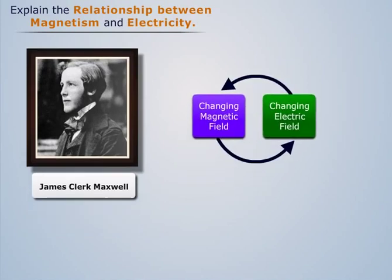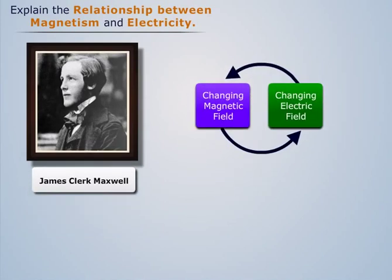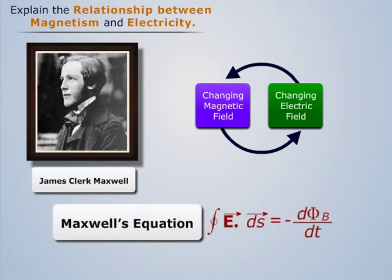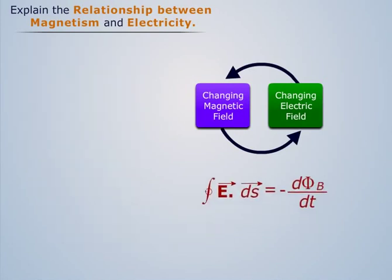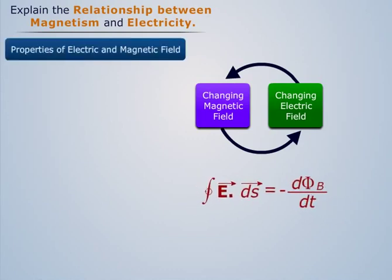In order to explain the relationship between the properties of electric and magnetic fields, Maxwell derived the following equation. This equation reveals the properties of electric and magnetic field.